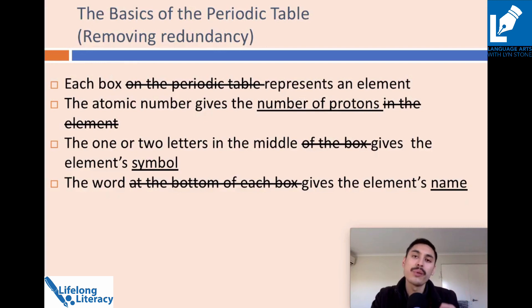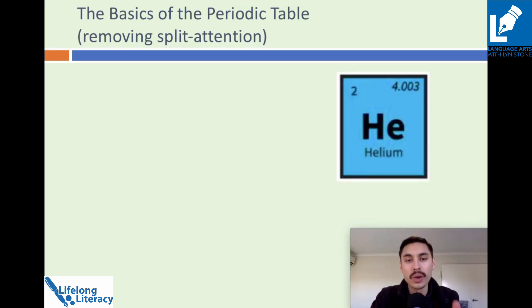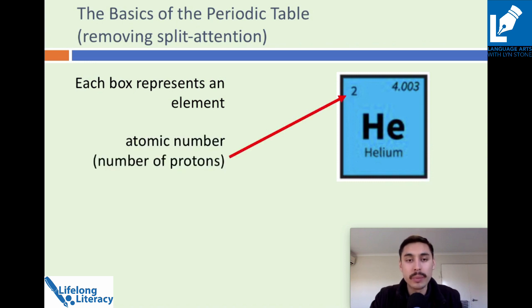So what would it look like if we actually incorporated the recommendations of the split attention effect in this context? Firstly, we want to basically just reduce that split attention. So here we go, we could present a picture of the periodic table actually there in front of them, or one of the elements. Each box represents an element. Here's the atomic number, and that represents the number of protons. Here's the element symbol, and here's the element's name.